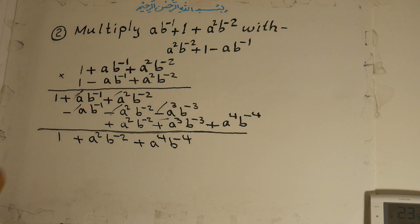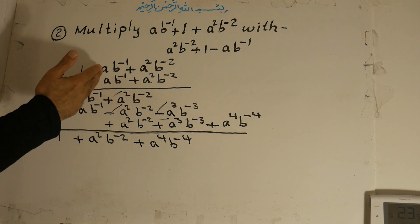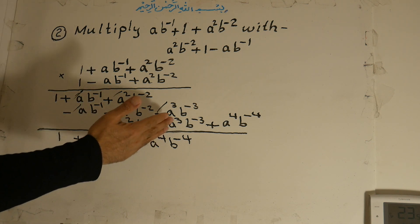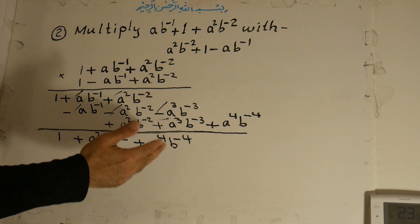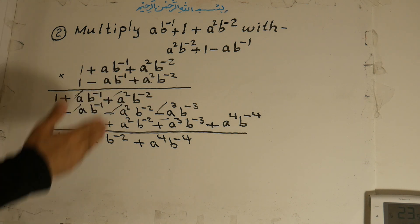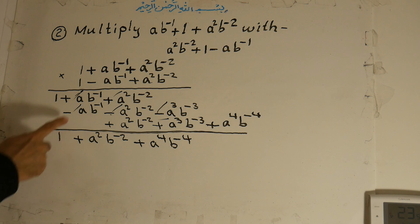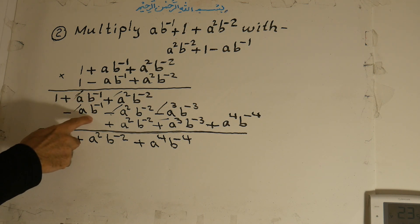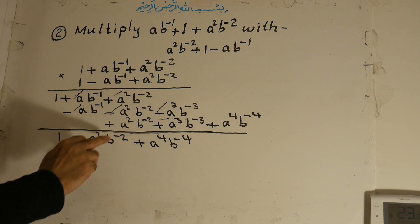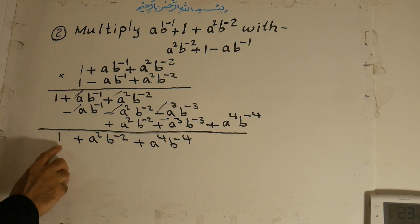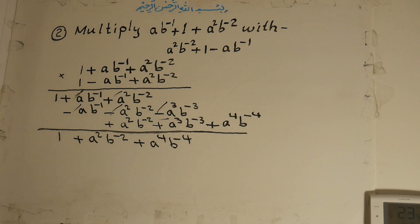And the third term: a to the power of 2 b to the power of negative 2 times 1 is a to the power of 2 b to the power of negative 2. Then a to the power of 2 b to the power of negative 2 times ab to the power of negative 1 is a to the power of 3 b to the power of minus 3. Positive times positive — a to the power of 2 b to the power of minus 2 times a to the power of 2 b to the power of minus 2 is a to the power of 4 b to the power of minus 4. Positive ab to the power of negative 1 cancels with the negative one, and these two cancel, leaving only a to the power of 2 b to the power of negative 2. These cancel because one is negative and the other is positive. The answer is 1 plus a to the power of 2 b to the power of minus 2, plus a to the power of 4 b to the power of minus 4.